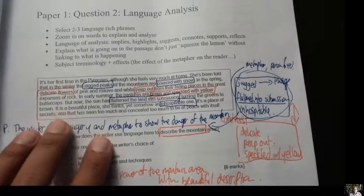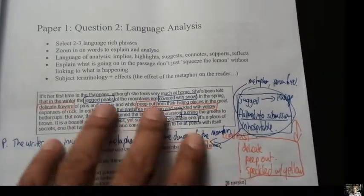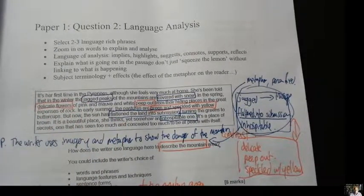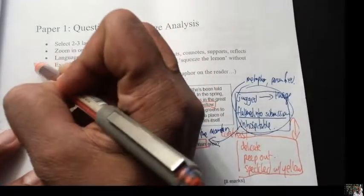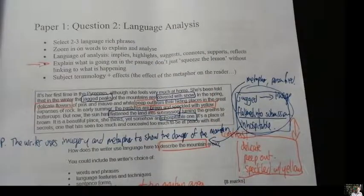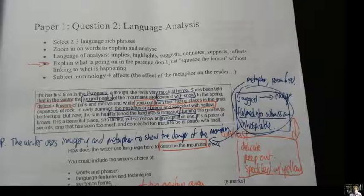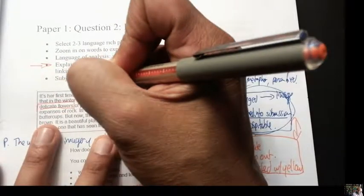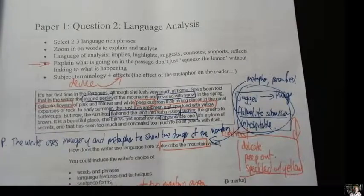Now, ultimately with this question, if you can get two to three rich phrases, if you can zoom in on the words and squeeze them of the meaning, you're doing quite well. The really underrated steps, which a lot of our students fail to do, is you just analyze without explaining what's actually going on. And finally, a lack of use of actually discussing the device and its effects on the reader.